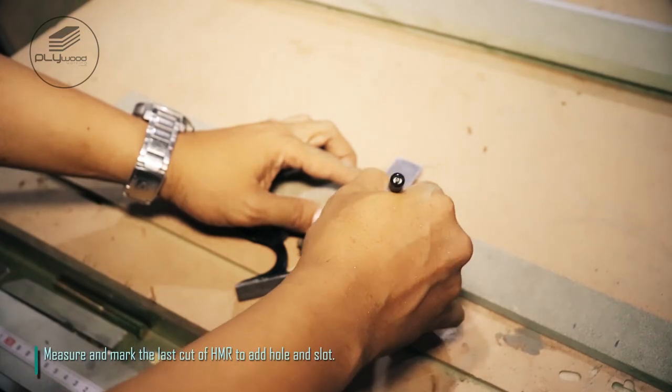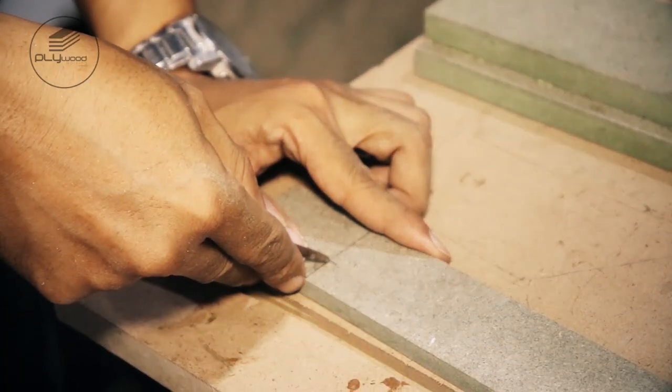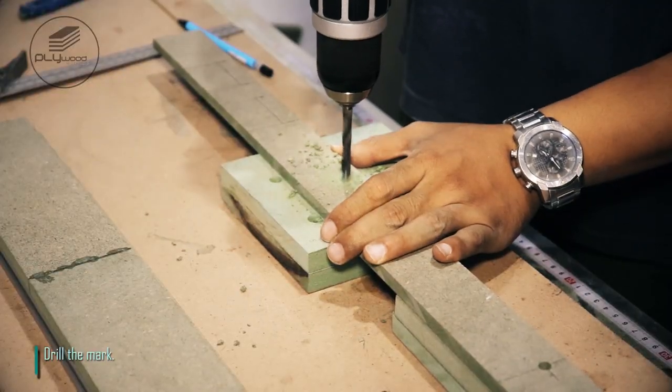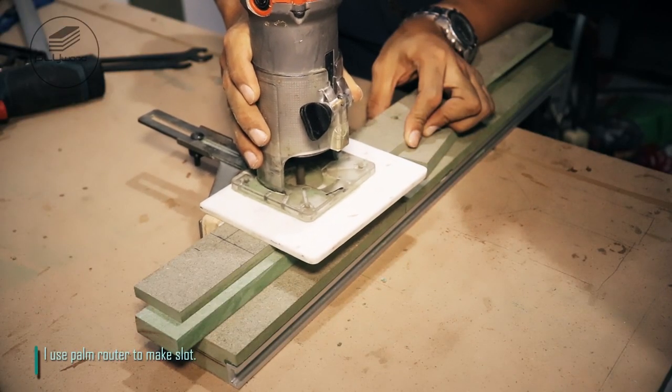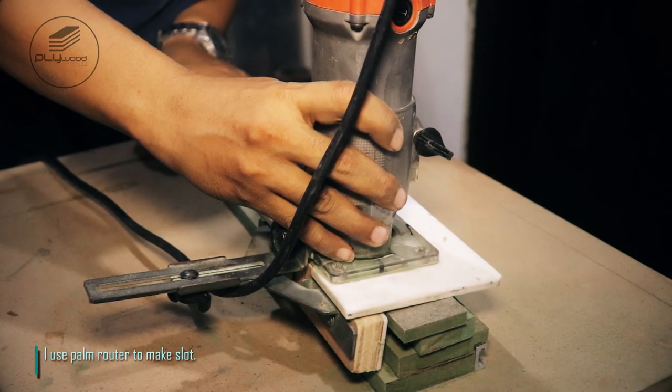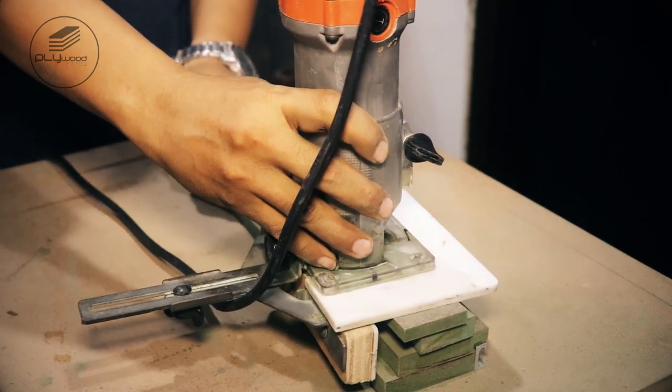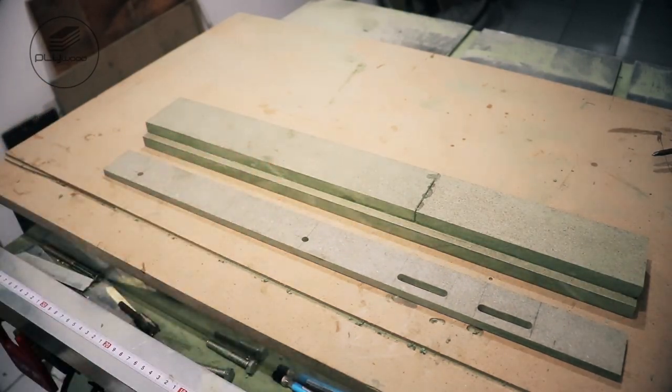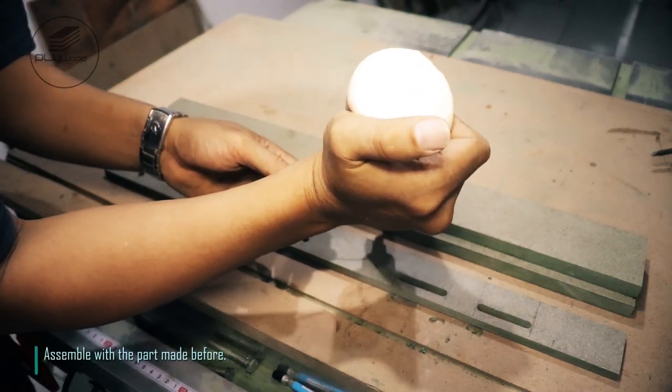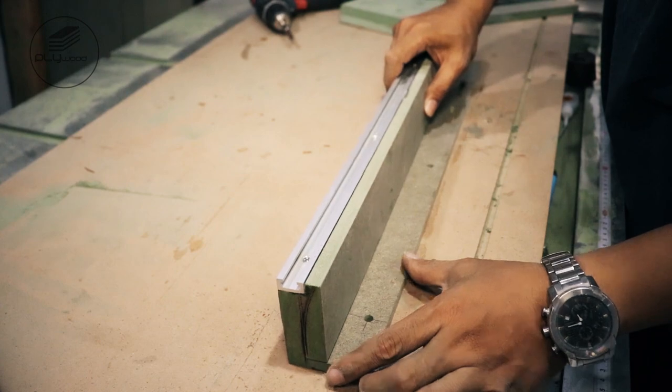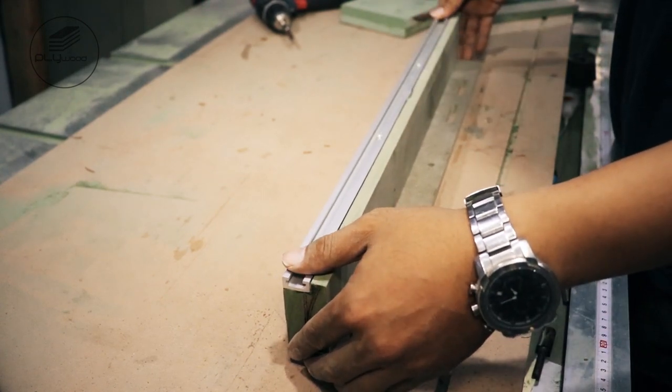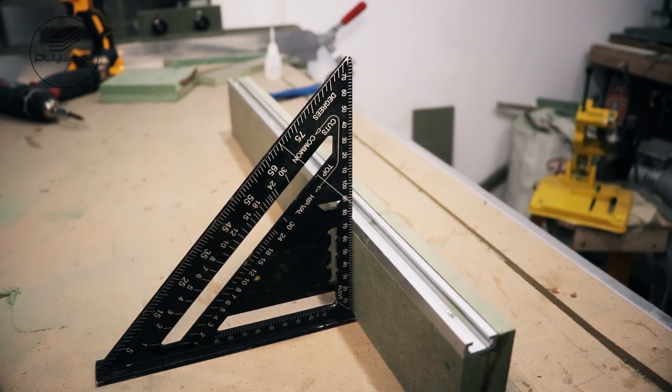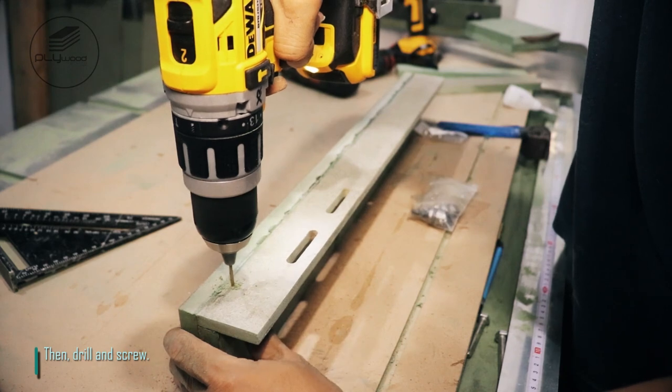Measure and mark the last cut of HMR to add hole and slot. Drill the mark. I use palm router to make slot. Assemble with the part made before. Always check using speed square. Then, drill and screw.